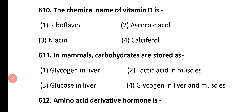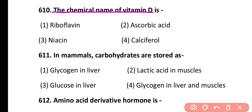Question 610. The chemical name of vitamin D is: ascorbic acid, niacin, calciferol. Correct answer is option 4. Cholecalciferol is the chemical name of vitamin D.